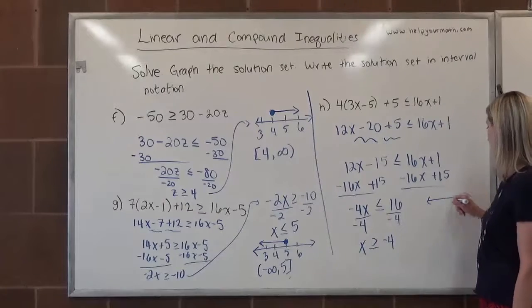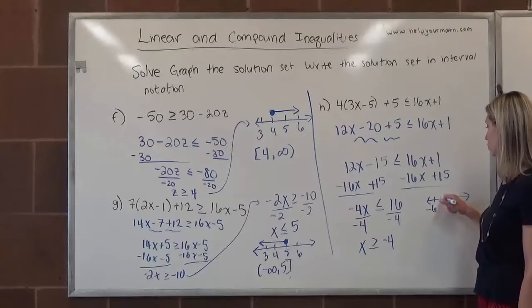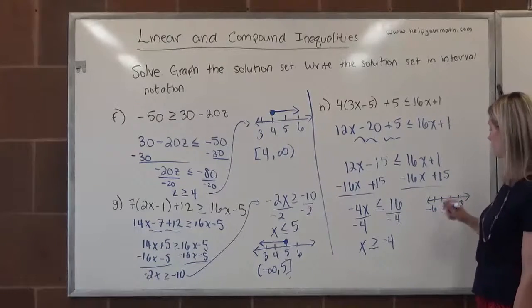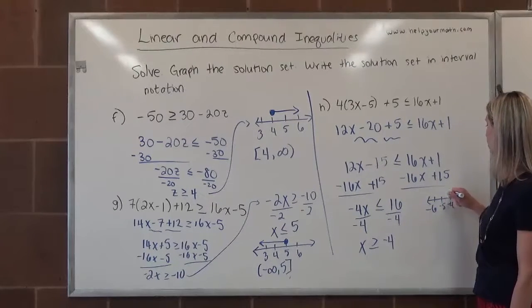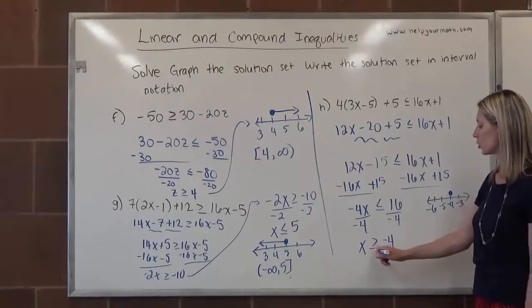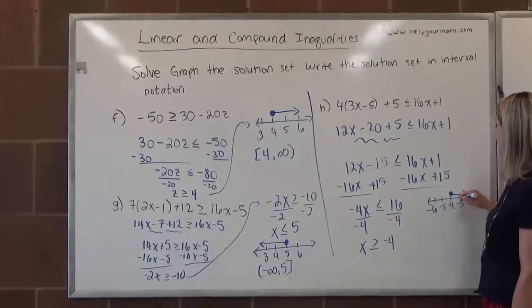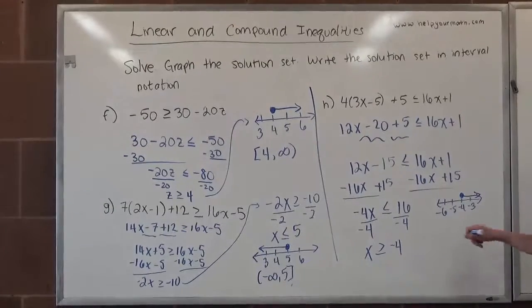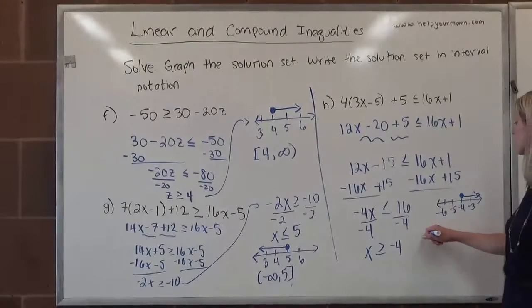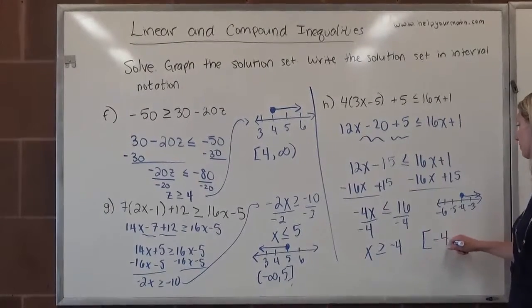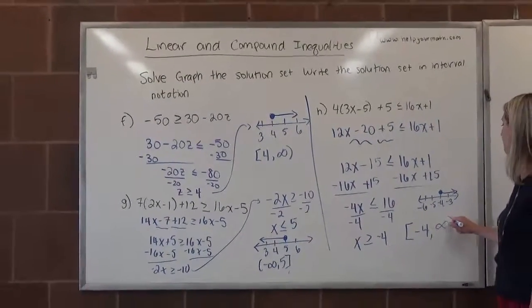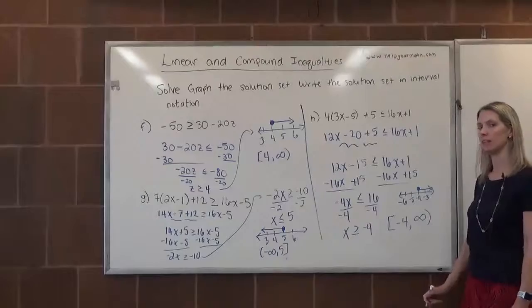On a number line, we include negative 4: negative 6, negative 5, negative 4, negative 3. Negative 4 is part of the solution set so we use a closed circle. Numbers bigger than negative 4 are to the right. In interval notation, it starts at negative 4 and includes negative 4, so I use a bracket, going to infinity. We always use a parenthesis for infinity.